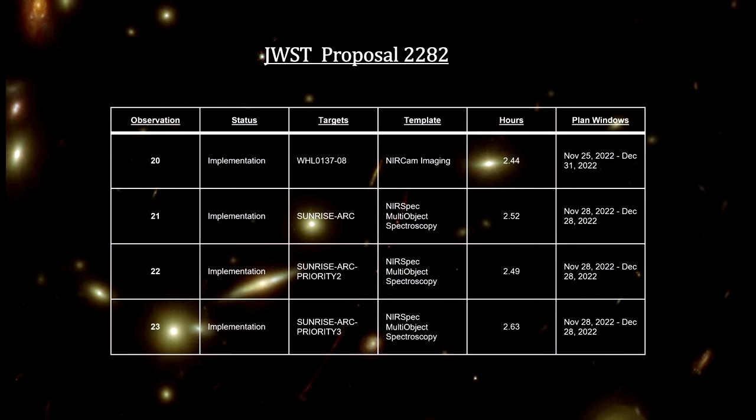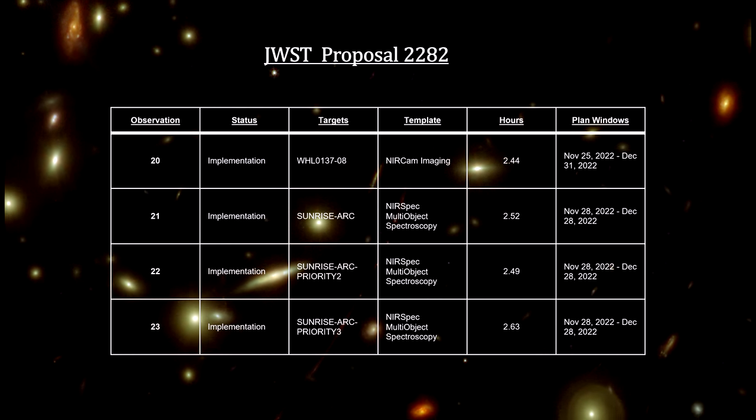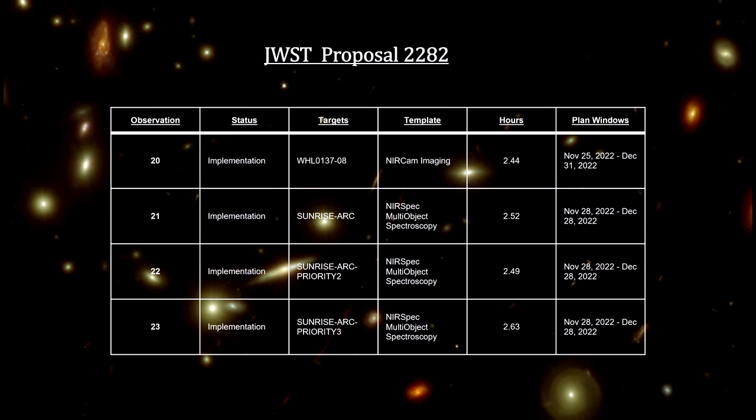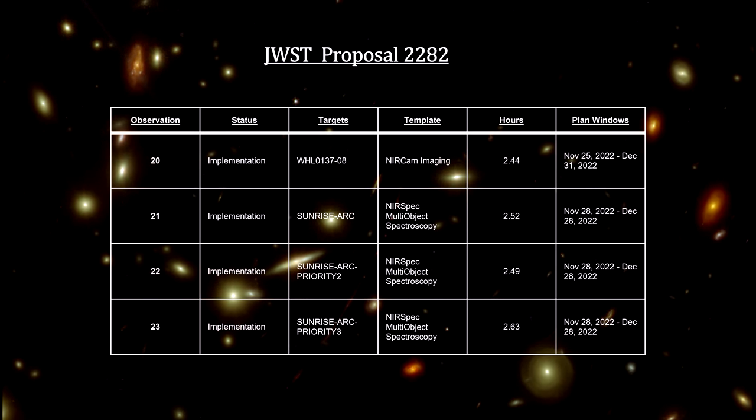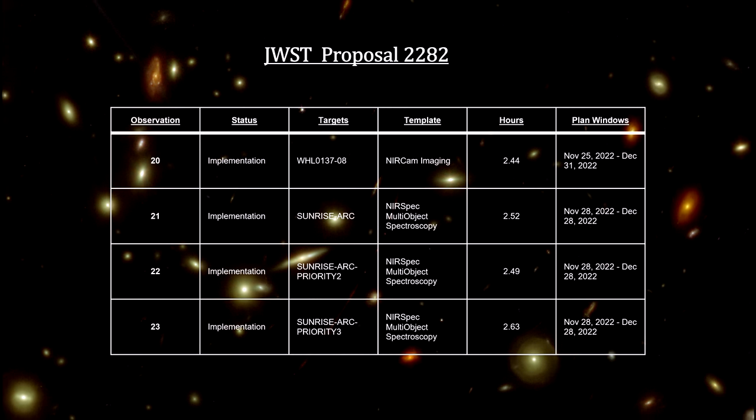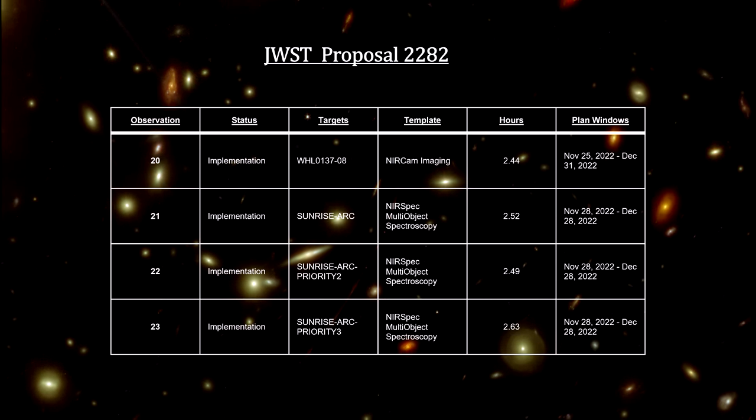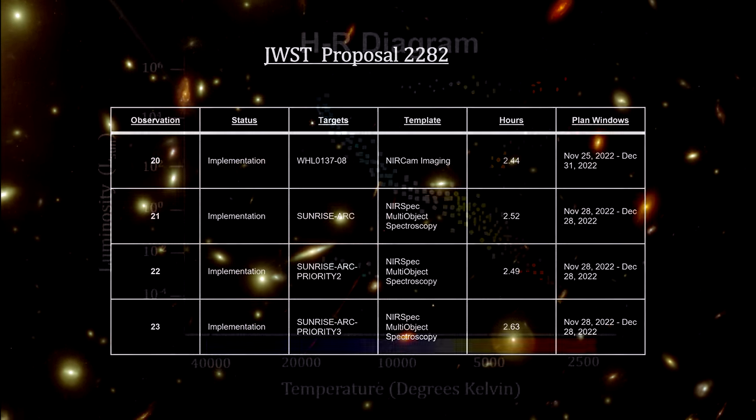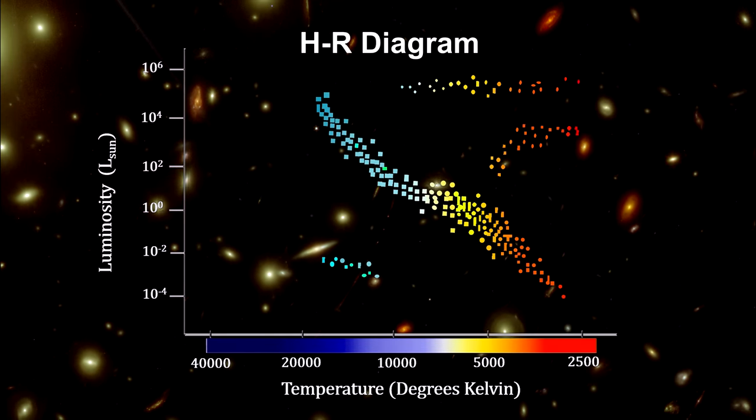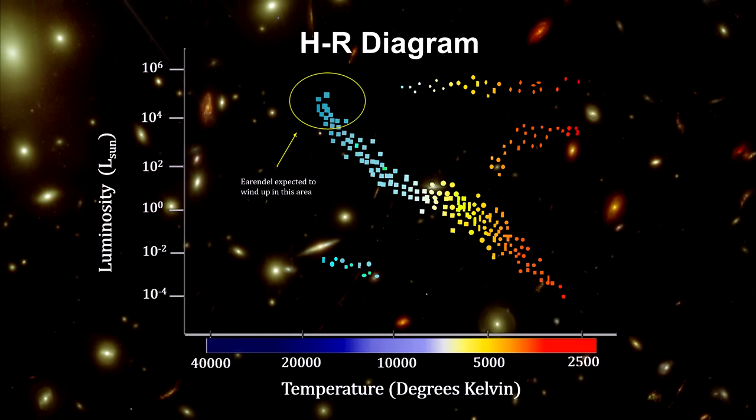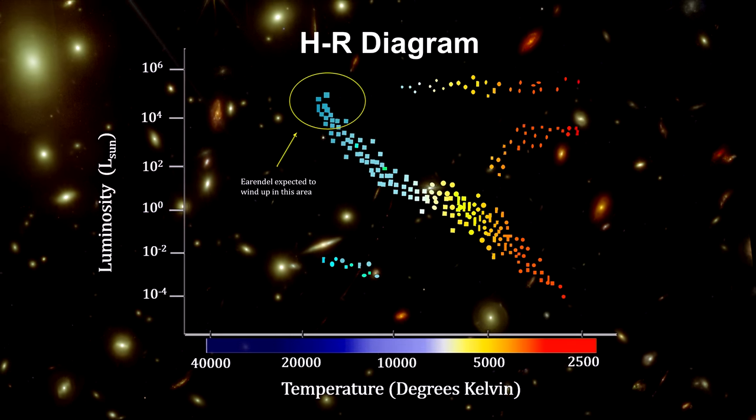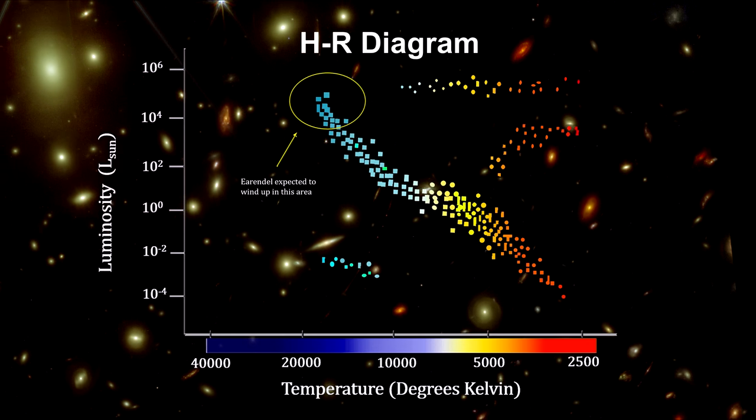A spectrographic study by the James Webb Space Telescope is scheduled for November 2022. It will provide detailed data on its mass, radius, and the elements it's made of. This will be enough to place Arendelle on the Hertzsprung-Russell diagram, and we'll know if it is our first Population 3 star.